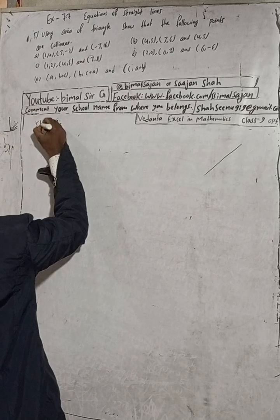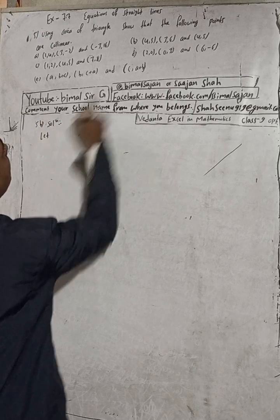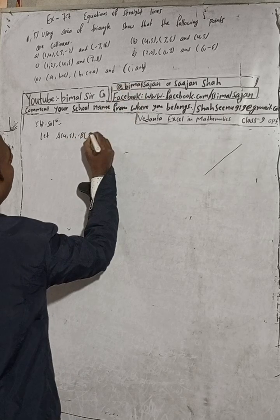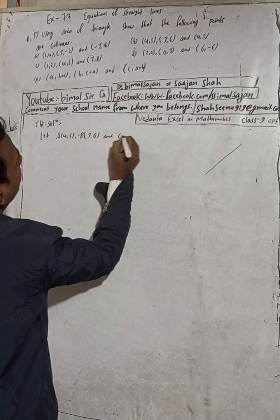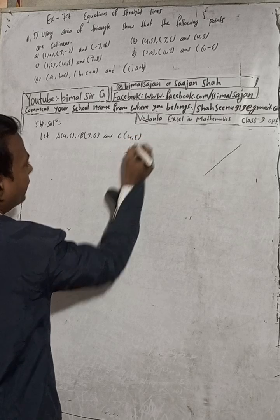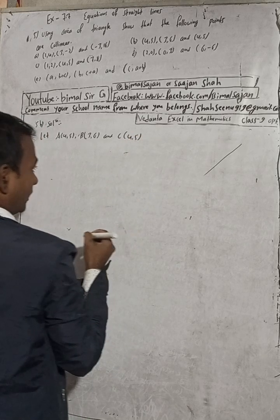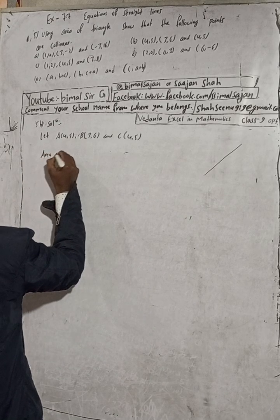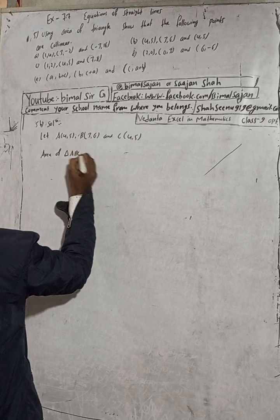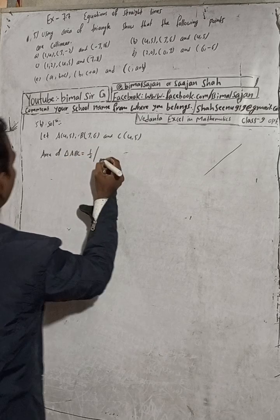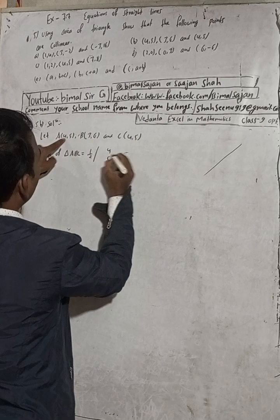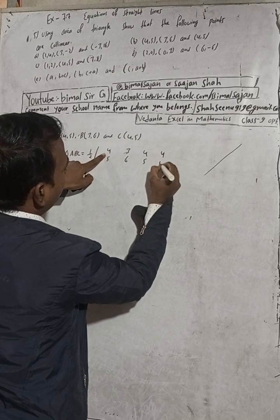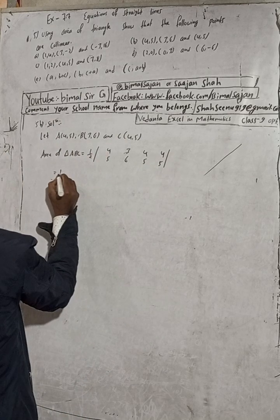Now for part 5b: let A(4,5), B(3,6), and C(4,5). We find the area of triangle ABC using the formula 1/2. We write the coordinates: 4,5 then 3,6 then 4,5, and repeat 4,5.